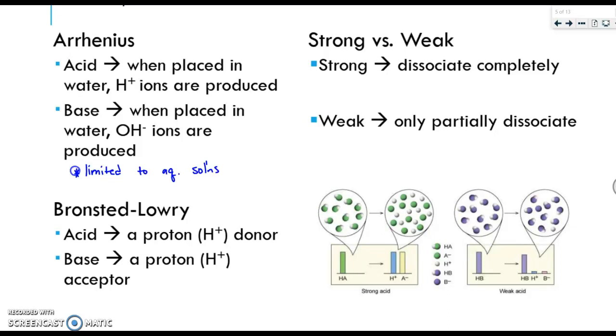So in addition to those definitions, we need to kind of talk about strong versus weak. We need to go through what's strong and what's weak. Strong acids and bases are strong electrolytes. They dissociate completely, which means they turn 100% into their ions. So an example of this would be something like HCl. HCl completely breaks apart into its two ions, H plus and Cl minus. And the arrow only goes in one direction.